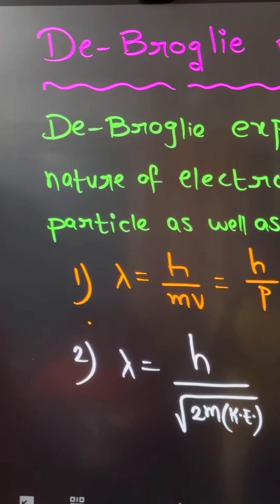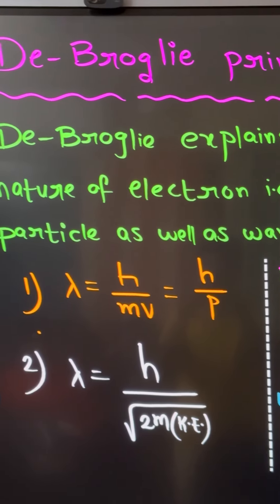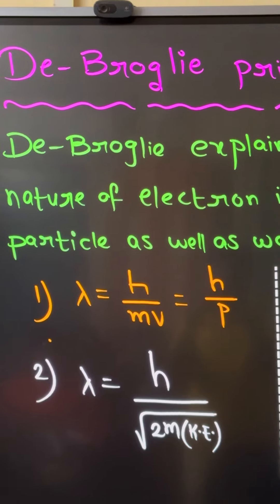De Broglie principle. De Broglie explains the dual nature of the electron. It has particle nature as well as wave nature.